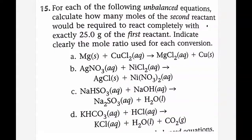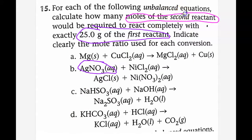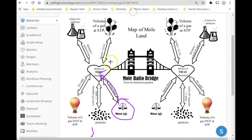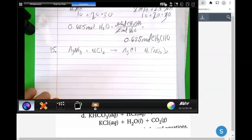For 15B — in fact, all of these problems — we're given 25 grams of the first reactant. Reactants are on the left side of the arrow, so the first reactant is our given. The unknown is going to be moles of the second reactant. On our mole map, we're starting with grams of the given, going to moles of the given, then going over the mole bridge to moles of the unknown.